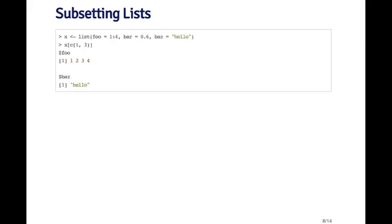If you want to extract multiple elements of a list, you need to use the single bracket operator. For example, if I want the first and the third element — the foo and the baz elements — I can pass the numeric vector c(1, 3) to x using the single bracket operator, and that returns a list with the elements foo and baz. You cannot use the double bracket or the dollar sign operators when extracting multiple elements.